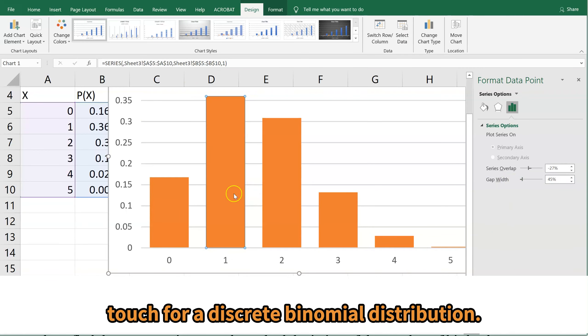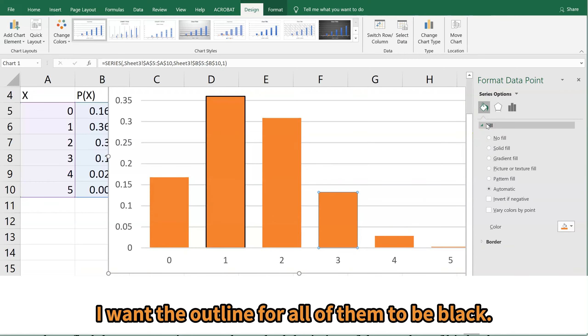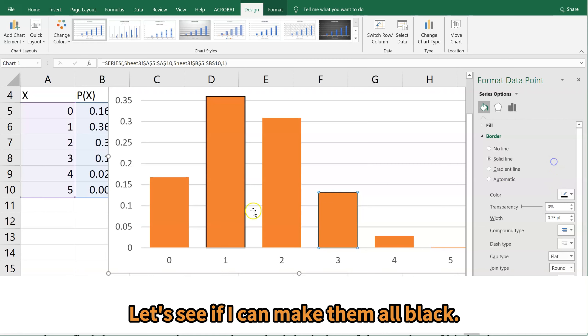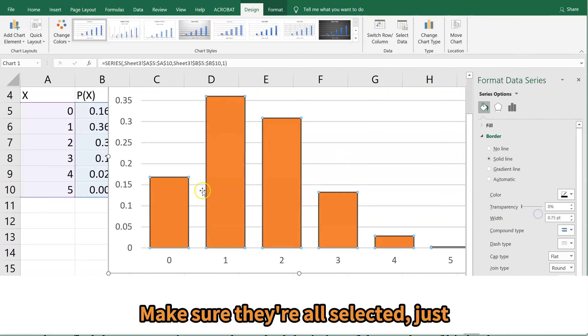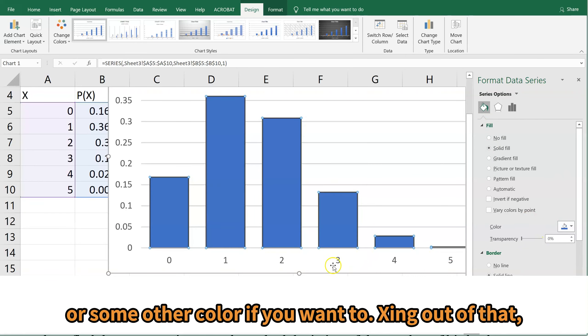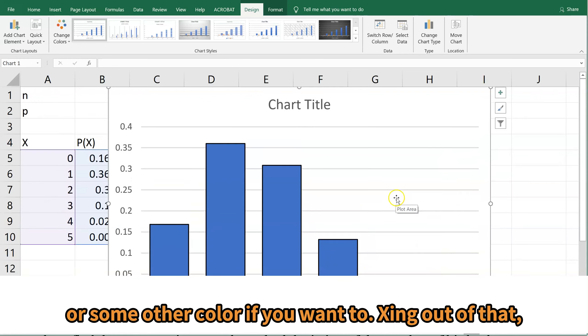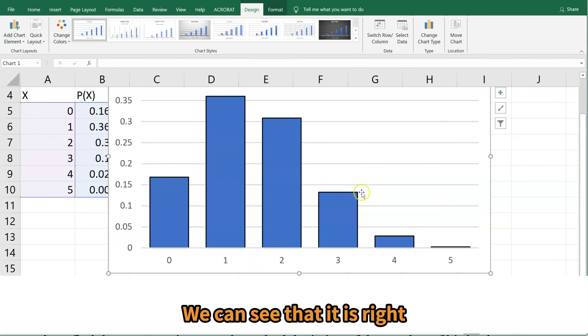I'm going to make the outline. I want the outline for all of them to be black, so let's see if I can make them all black. Make them all black, make sure they're all selected, just so we can see it a little bit. And then if you don't like that color, I'm not a big fan of the orange, you can change that to blue or some other color if you want to.